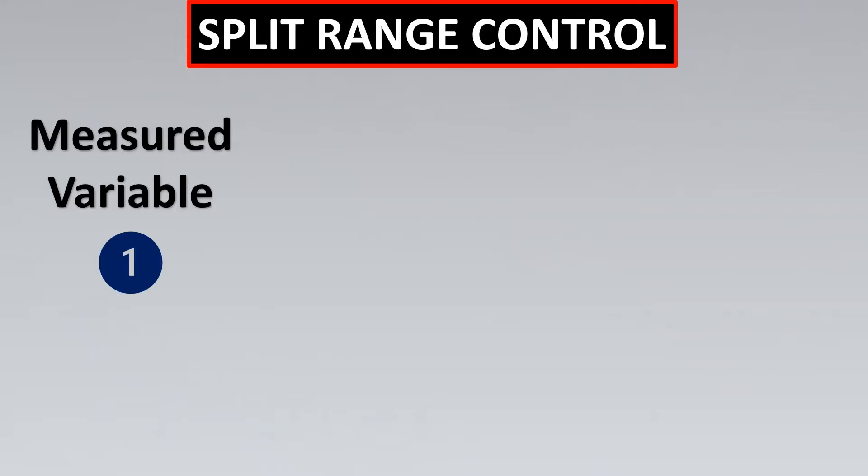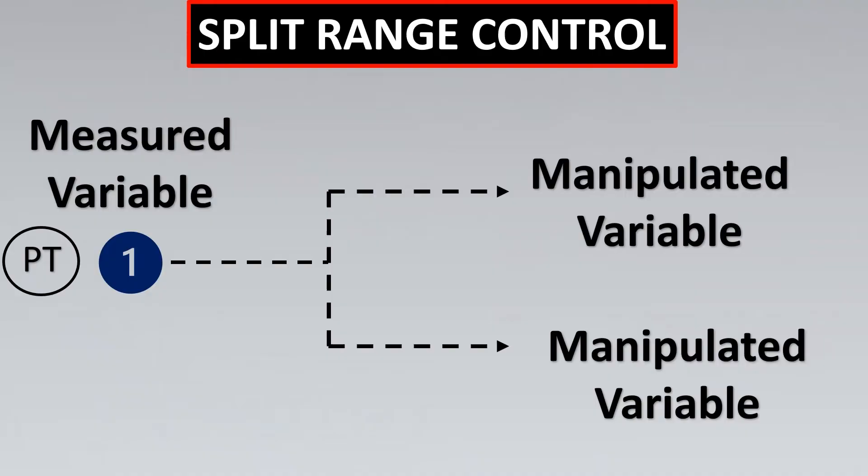In this video we are going to learn about split range control. So the most important thing to remember is that it has one measured variable, like a pressure transmitter, and the output is going to be split and divided. There are going to be two manipulated variables.